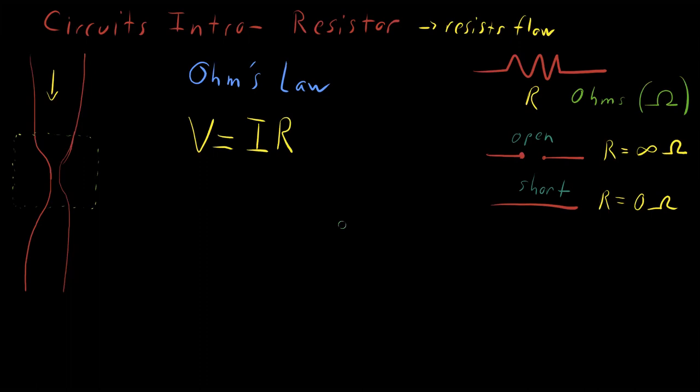And this is a really nice property because it embodies all of the intuition we just talked about. The higher the resistance for a fixed voltage will mean that you get decreased current flow. For an increase in voltage for a fixed resistance, you will get an increase in current flow.